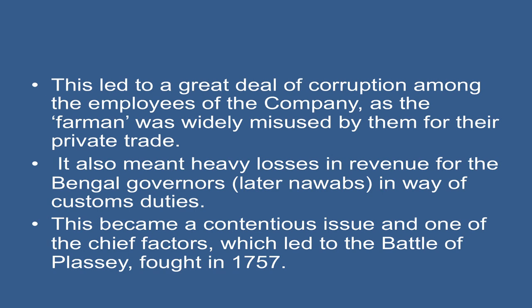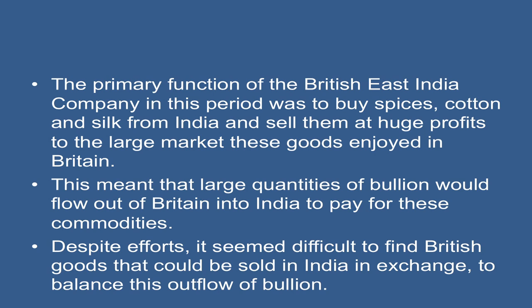This became a contentious issue and one of the chief factors which led to the Battle of Plassey, which was fought in 1757. The primary function of the East India Company in this period was to buy spices, cotton, and silk from India and sell them at huge profits in the large markets these goods enjoyed in Britain.